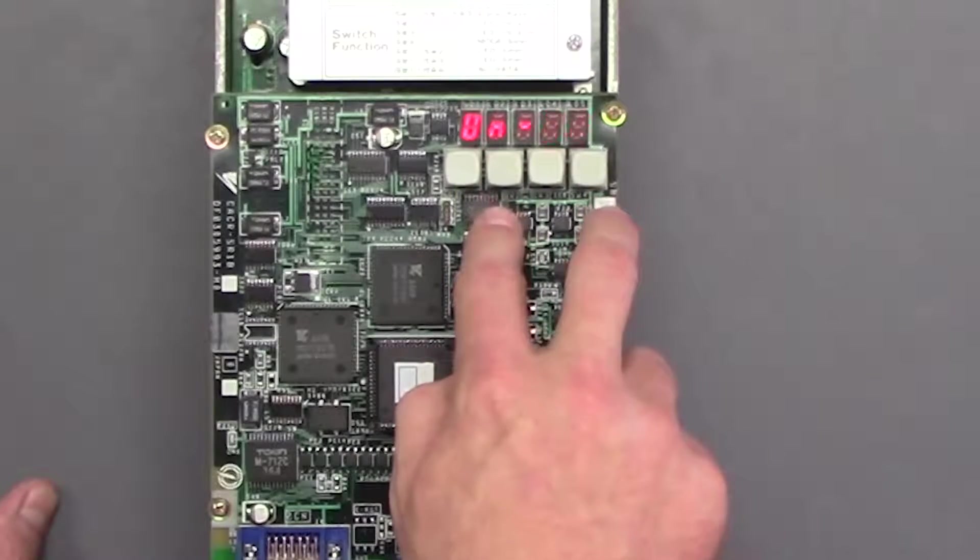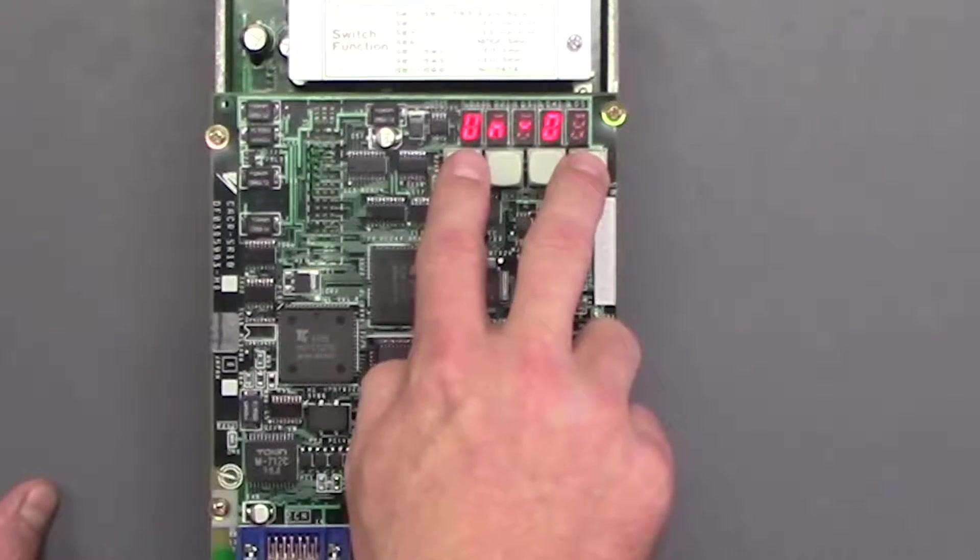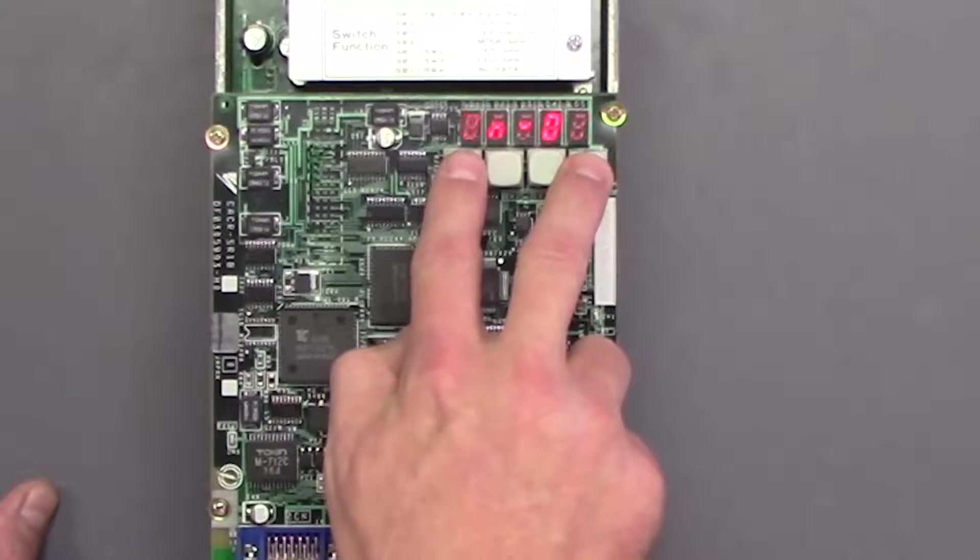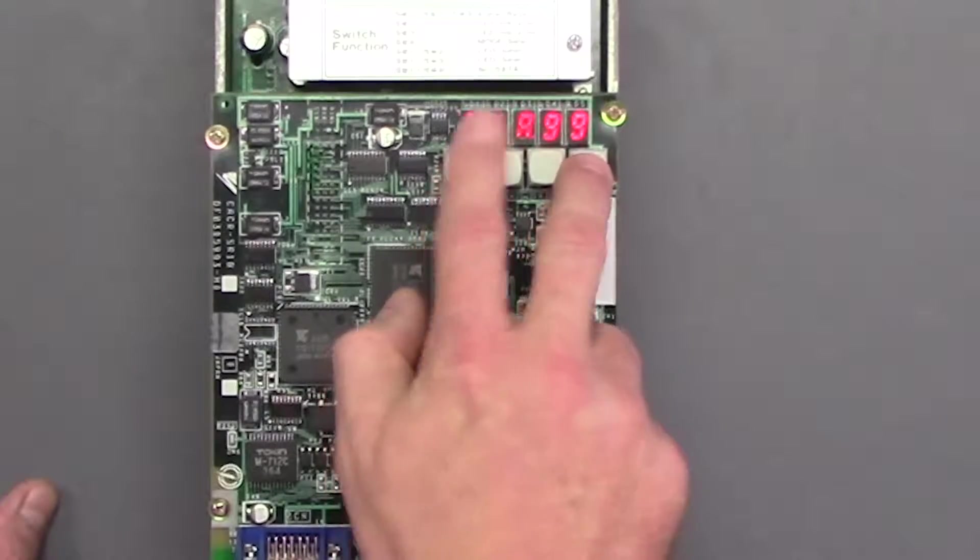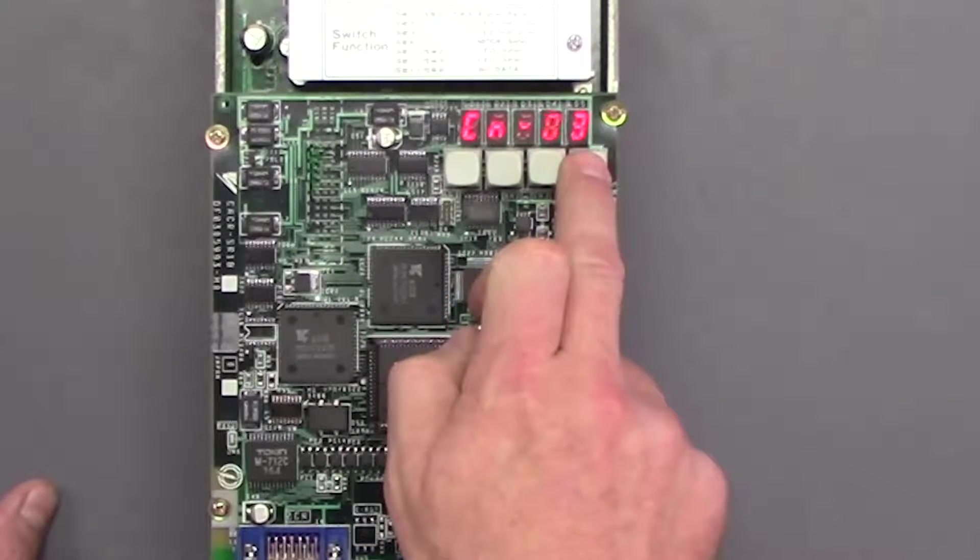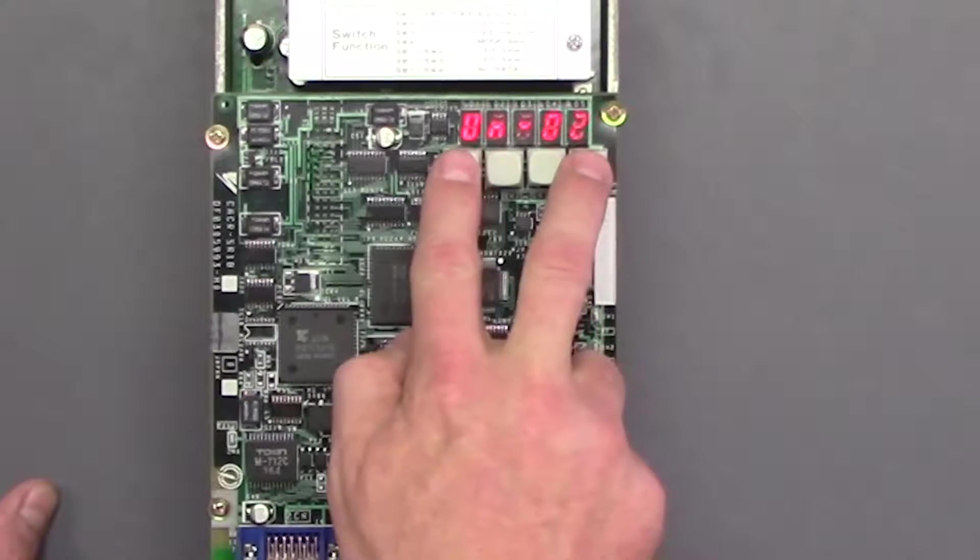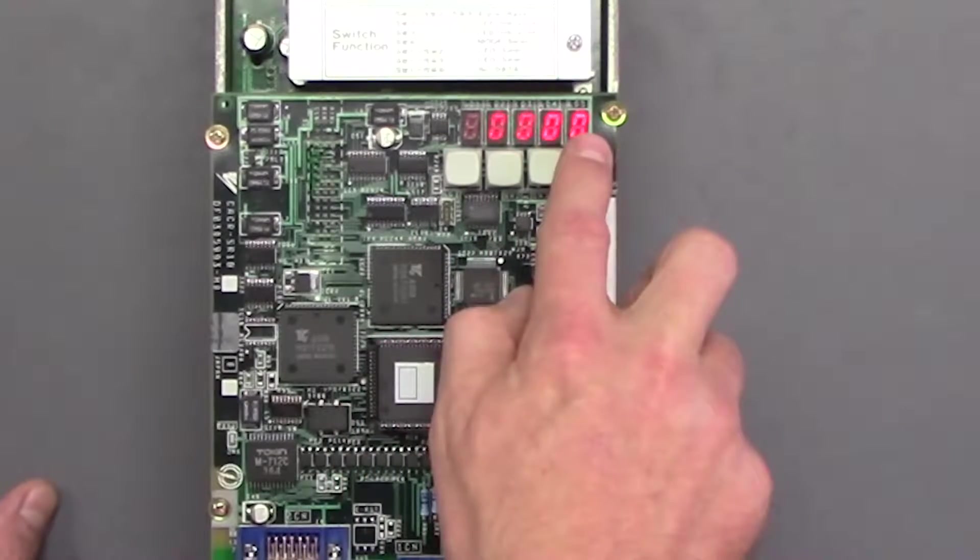To get into a UN monitoring press switch 1 and 4 at the same time. Now see, I said troublesome little buttons. Press 1 and 4 at the same time and you'll get in.